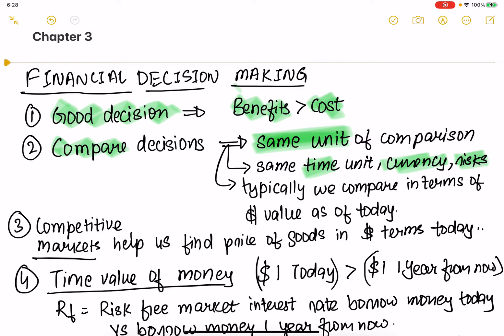When we compare all of them in terms of the value of a dollar today, we can do an apples-to-apples comparison. Otherwise, comparing $10 today with $10 in the future doesn't make sense. Comparing $10 of a stock investment with $10 of a bond investment doesn't make sense because the risks are different, the time unit is different. And comparing $10 with 10 pounds makes no sense either.